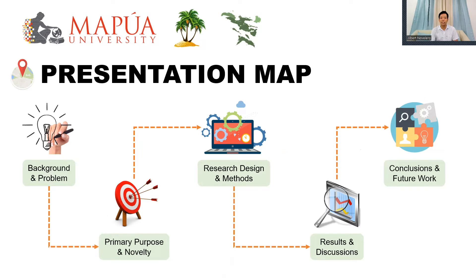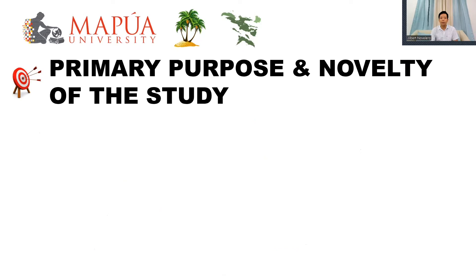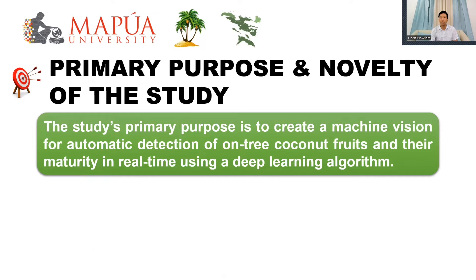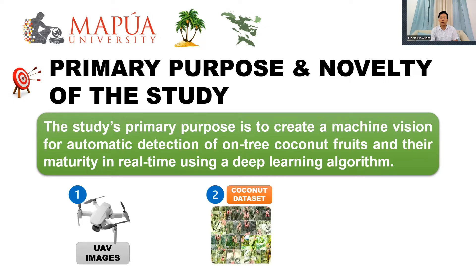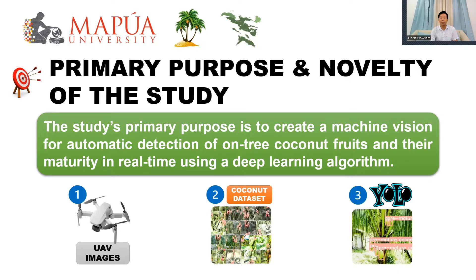The study's primary purpose is to create a machine vision for automatic detection of on-tree coconut fruits and their maturity in real-time using a deep learning algorithm. Additionally, the study aims to gather training, validation, and testing images using a DJI Mini SE drone; to generate a coconut fruit dataset to be shared online as an open-source dataset; and to implement YOLOv5 as the deep learning backbone to detect on-tree coconut fruit maturity in real-time.